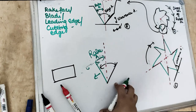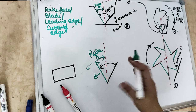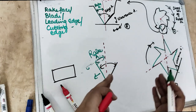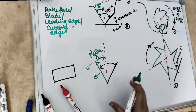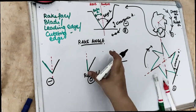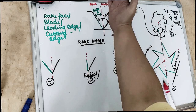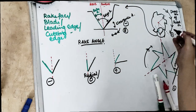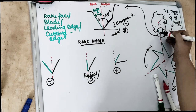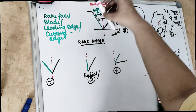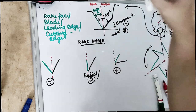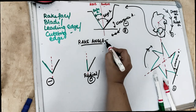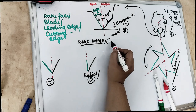The rake angle plays a significant role because we can determine whether this particular file is doing a scraping motion or a cutting motion — it depends on the rake angle. The rake angle is the angle between the rake face and the long axis or the radius. The flute is one part, and the green part is our rake face or leading face or cutting face or blade. Now this rake angle can be of three types: negative, positive, and zero.